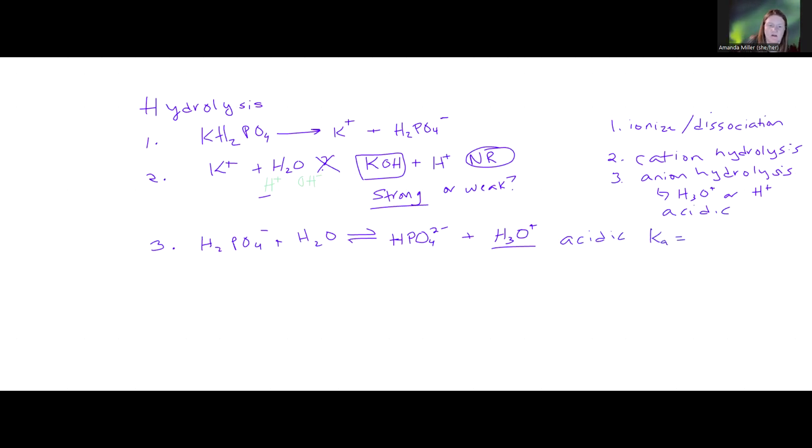If it donates one of those Hs, that means we are losing a positive charge. So now it's going to be a 2- product, and that means our other product would be H₃O+ because the H from H₂PO₄- was donated. That is an acid if we produce H₃O+ or H+, because the anion reacted with water. That means our sample would be acidic if that's what happens. That means there's a Ka.